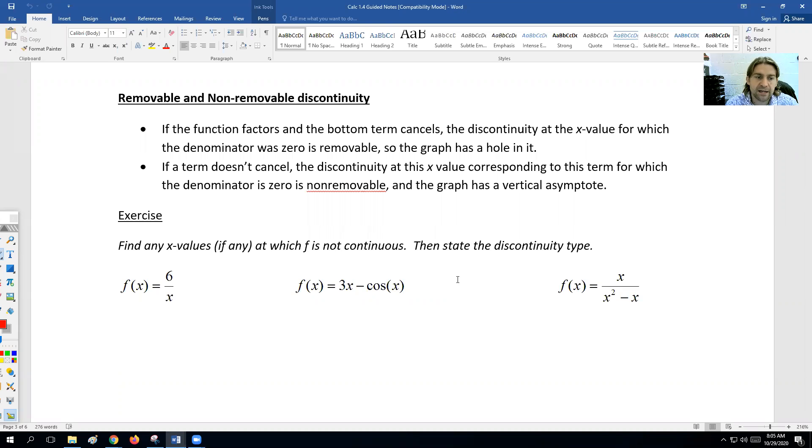The way that we can determine removable or non-removable discontinuity is we're going to look at the denominator of our function. If the denominator can factor out and be canceled, we would describe that as removable discontinuity. If the denominator cannot, we would say that this discontinuity is non-removable, meaning that the graph would have a vertical asymptote.